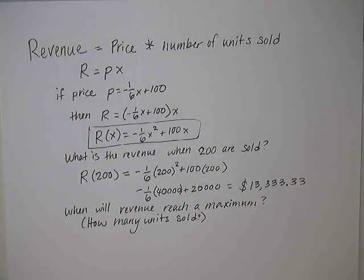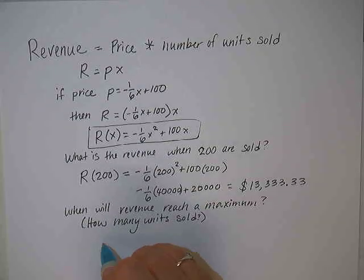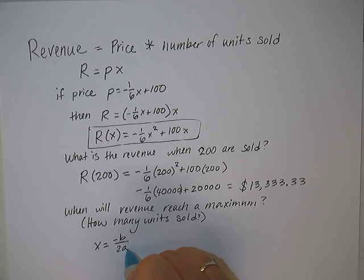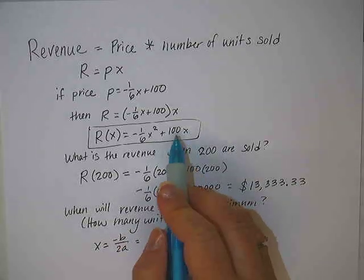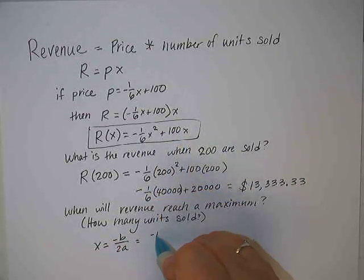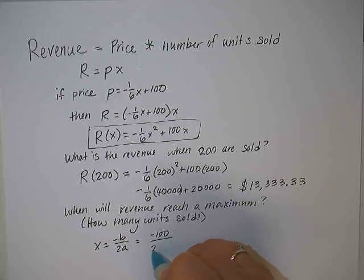To do that, we look at our function that we figured out earlier, and we want to find the maximum, which is simply the vertex. All we have to do is find the vertex value, which would be negative B over 2A.